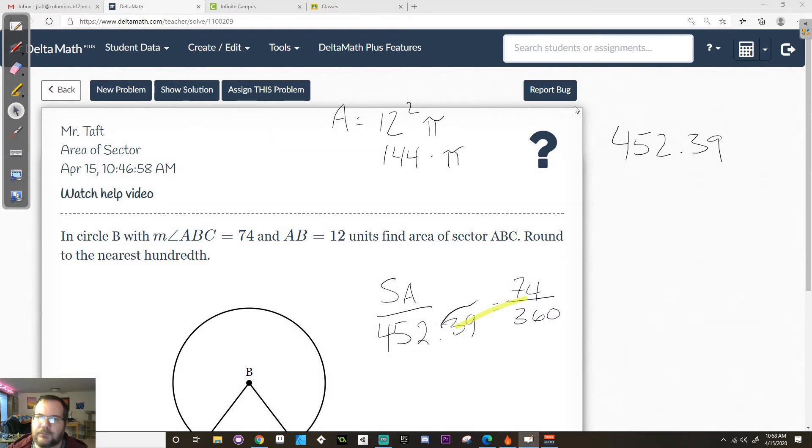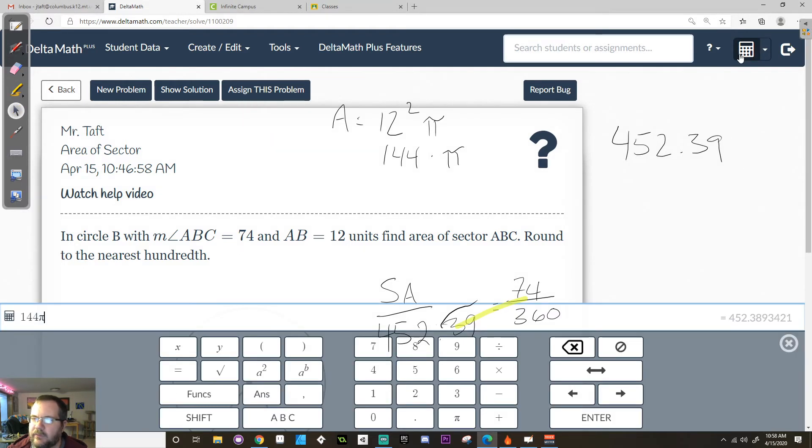And then from here it's the same as what I taught you before. So I'm going to cross multiply. One side I'm going to do 74 times 452.39. So that turns into 33,476.6.